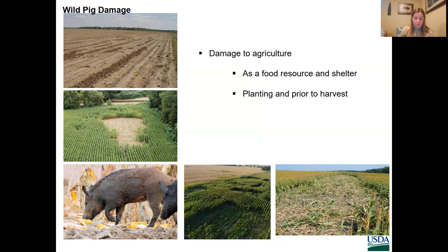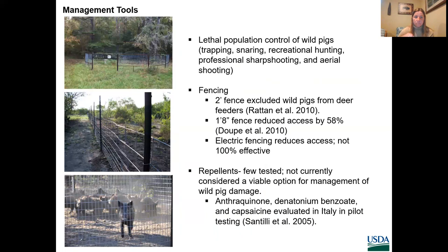Wild pigs reportedly cause more damage to corn than any other type of crop. Wild pigs use corn as a food resource and as shelter. Damage occurs during two primary growth stages — immediately following planting, and after the ears mature — but most damage occurs immediately after planting, when wild pigs consume the freshly planted and germinated seeds. The pictures on this slide, going counterclockwise, show wild pig damage to a recently planted cornfield, aerial views of damage to cornfields, a wild pig eating field corn prior to harvest, and damage to a sorghum field near harvest.